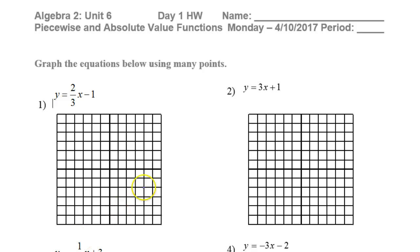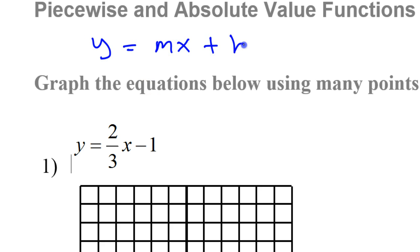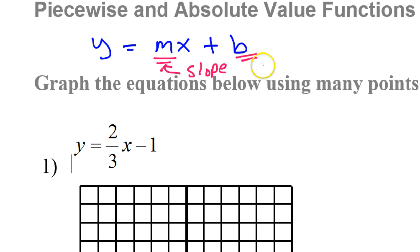This video is a quick review of how to graph linear equations. When you have an equation in the form y equals mx plus b, the m represents the slope and the b represents the y-intercept.